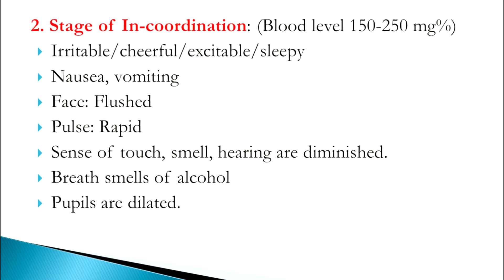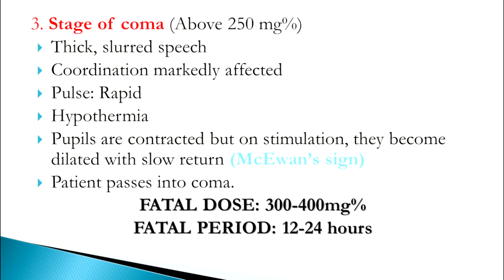The second stage — stage of incoordination — occurs when blood alcohol concentration ranges from 150 to 250 mg%. The person may be irritable, cheerful, excitable, or sleepy. Nausea and vomiting may occur. The face appears flushed or pale. The pulse is rapid, and the senses of touch, smell, and hearing are diminished or lost. The breath smells of alcohol and the pupils are dilated.